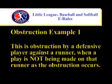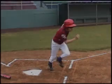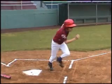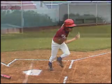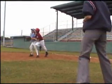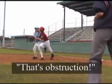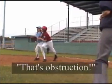This is an example of obstruction when a play is not being made on the runner. In this scenario, the batter hits a ball into left field. After rounding first base, the batter runner collides with the first baseman and the umpire signals obstruction.